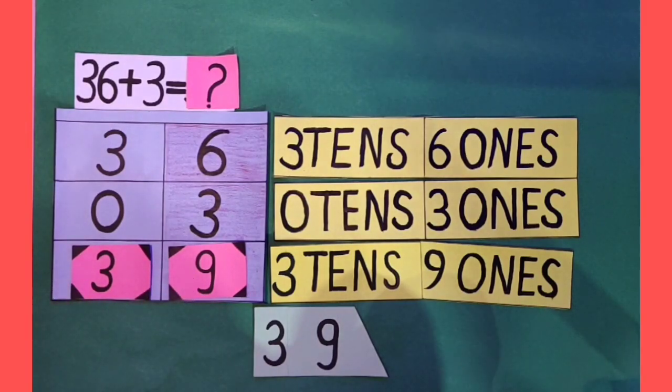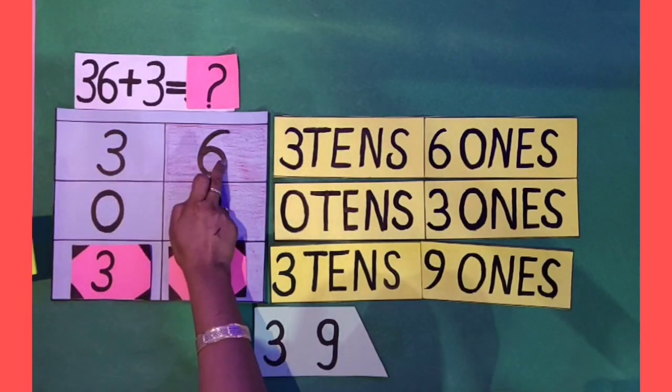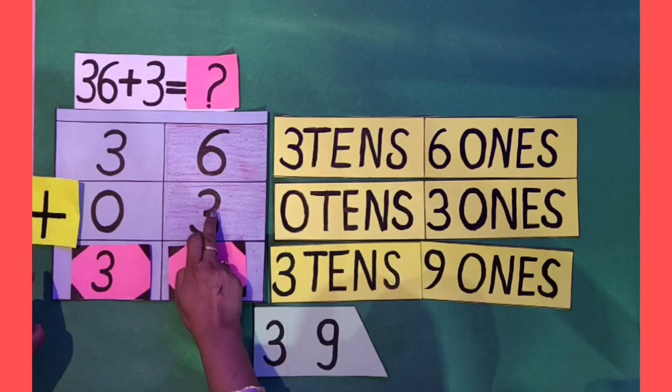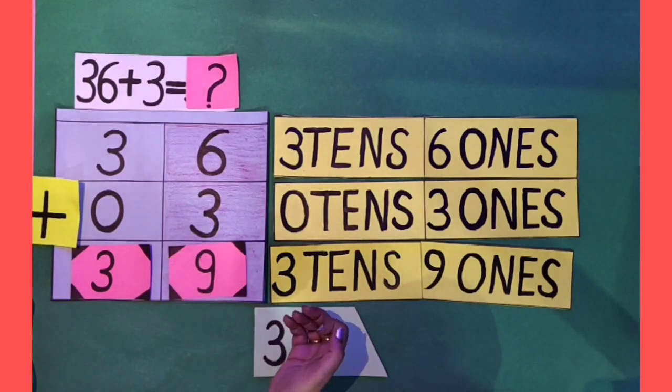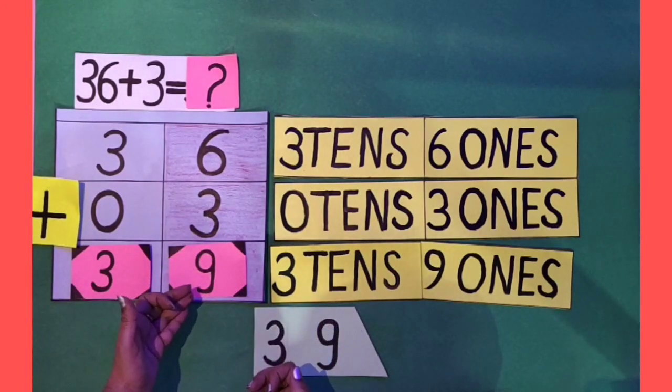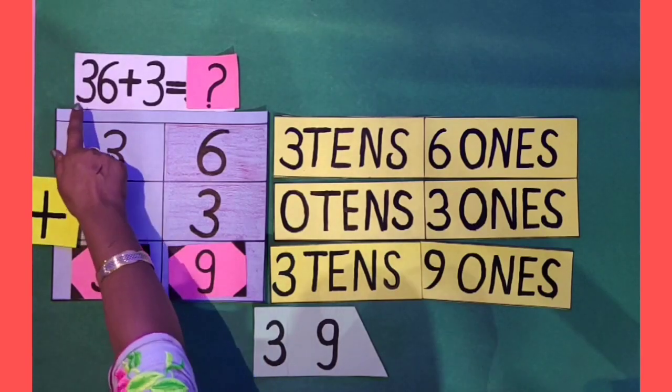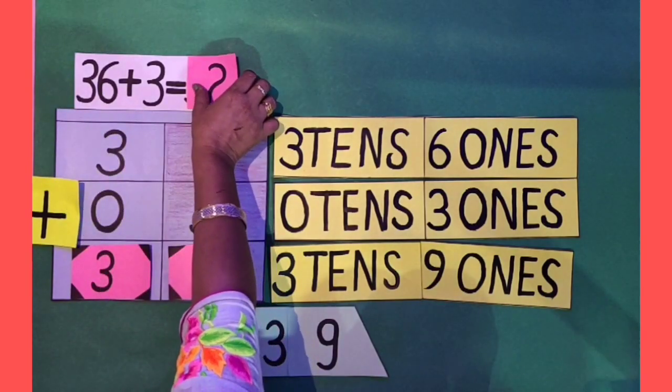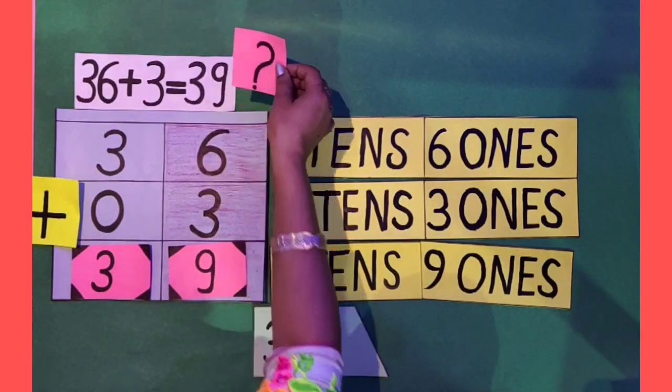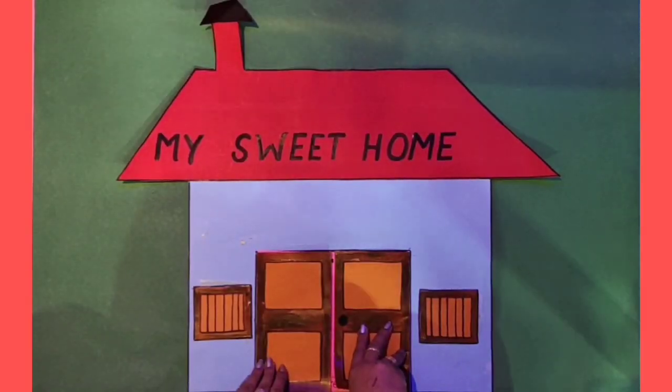So, after adding 36 and 3, we get the answer 39. So, dear kids, 36 plus 3 equals 39.